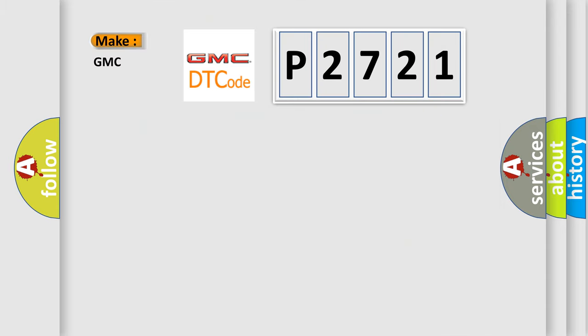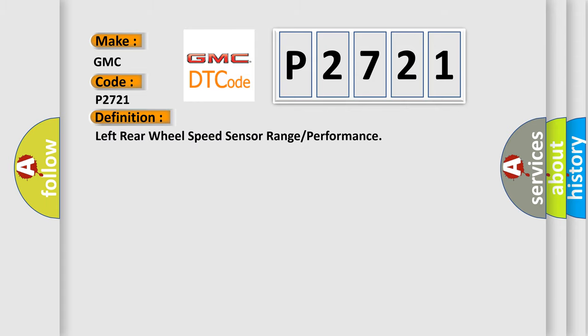So, what does the diagnostic trouble code P2721 interpret specifically for GMC car manufacturers? The basic definition is left rear wheel speed sensor range or performance.